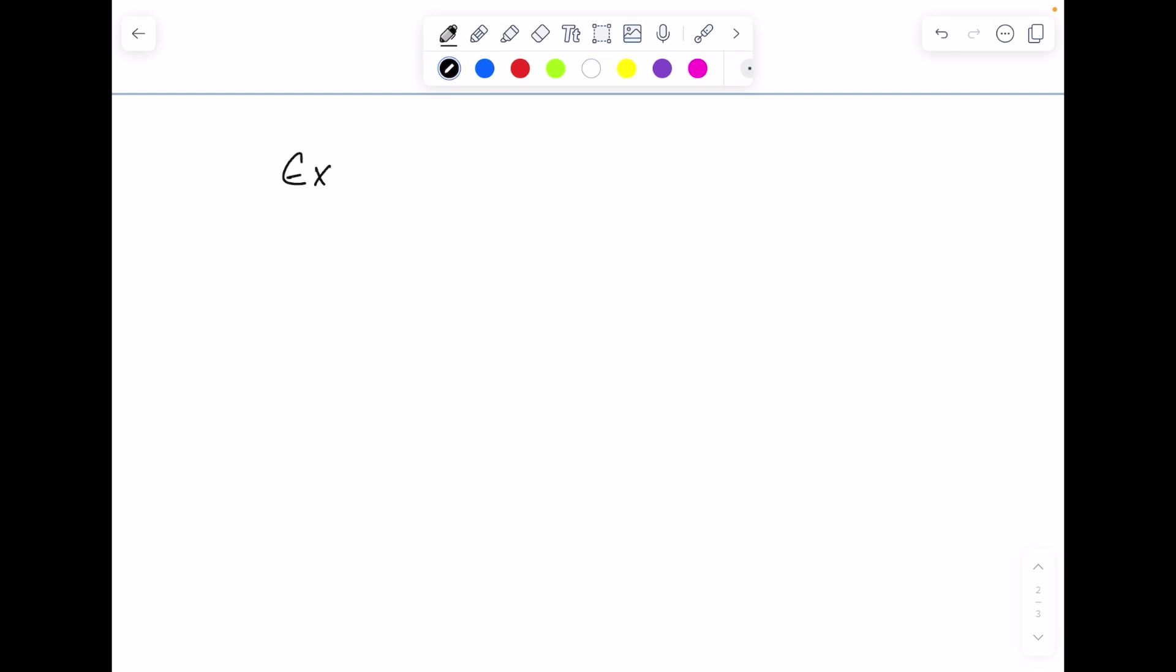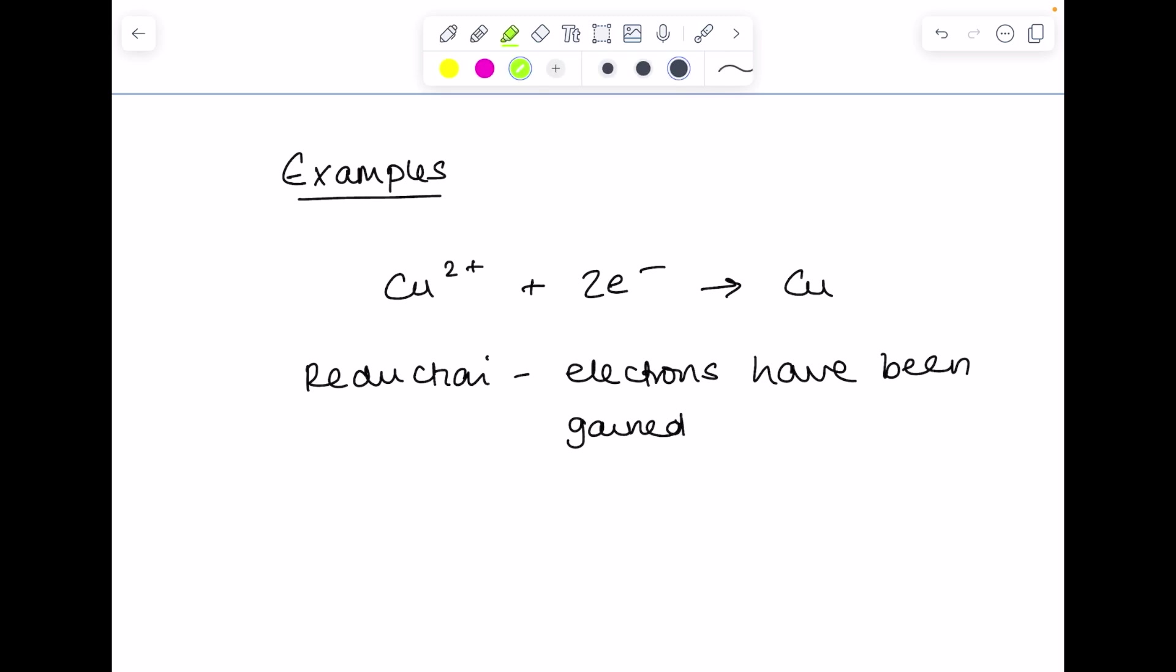Now we're going to look at some examples. So taking this one, you could be asked, has oxidation or reduction taken place? And you would say reduction, why? Because electrons have been gained. Look, there they are being added.